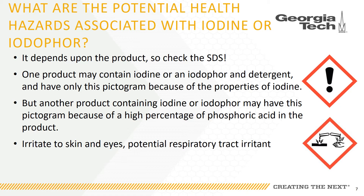The first pictogram of an exclamation point indicates the following possible hazards: irritant to the skin and eye, skin sensitizer, acute toxicity, narcotic effects, and respiratory tract irritant. Please note, not all of these hazards are likely applicable to iodophor, so read the SDS carefully. The second pictogram of liquid in test tubes being poured on a hand and a surface represents corrosion. These signify that the chemical may cause eye damage, skin corrosion or burns, and it may be corrosive to certain metals.